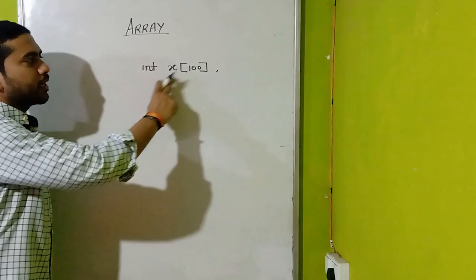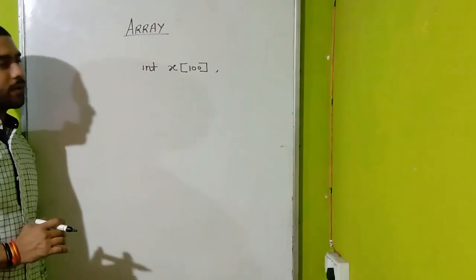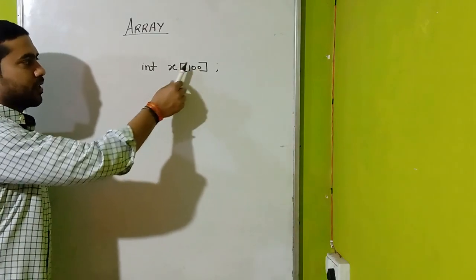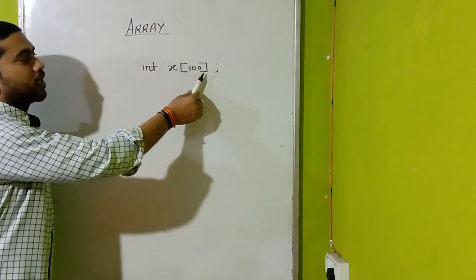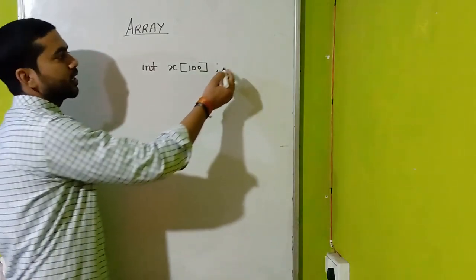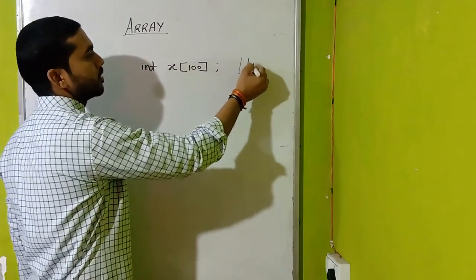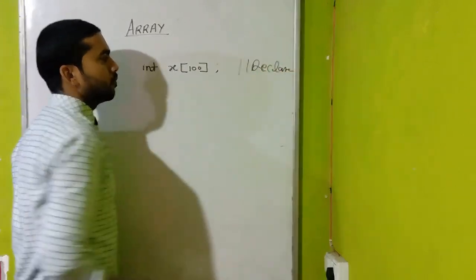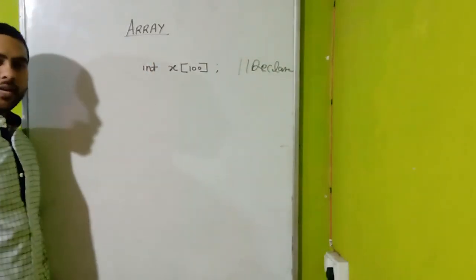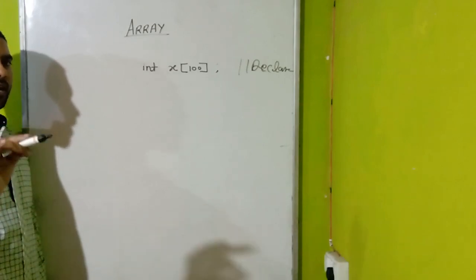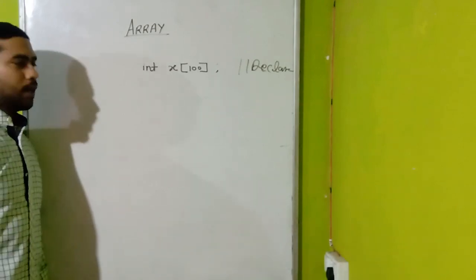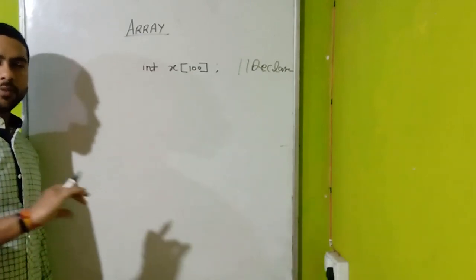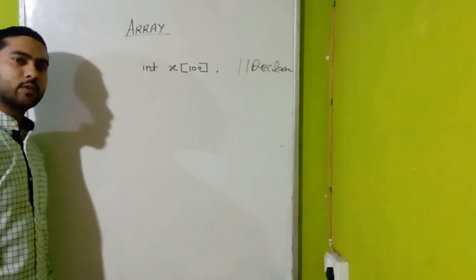Sirf itna likhne se 100 variables yahan pe ban jaate hain, integer type ke, aur isse hum array kehte hain. Kisi bhi variable ke saath square bracket aur iske andar size deta hai — to isko aap bol sakte hain array ka declaration. Humne array ko yahan pe declare kar diya, yaani humne 100 variables bana liye. Ab aap soch rahe honge ki woh 100 variables kis naam se hain aur unka memory consumption kis tarah se hoga.